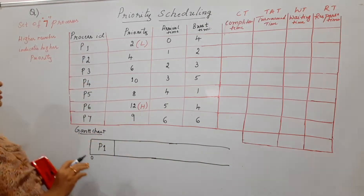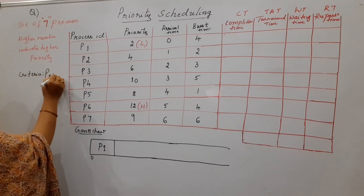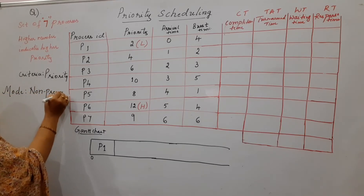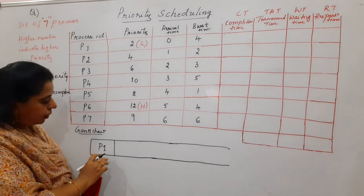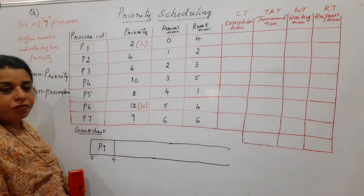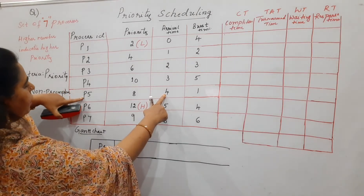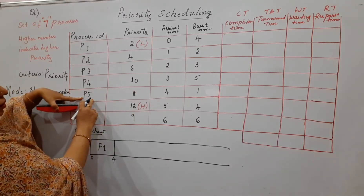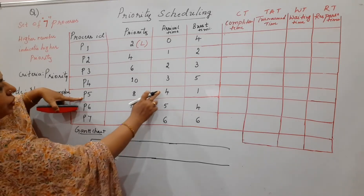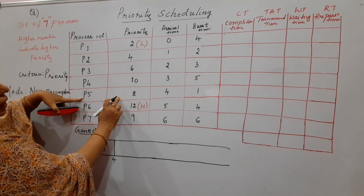We are solving the non-preemptive type first. The criteria is priority and the mode of operation is non-preemptive. In non-preemptive scheduling, once a process is assigned the CPU it runs to completion. P1 has burst time 4, so it ends at time 4. At time 4, we check which processes are available: P2, P3, P4, and P5 have all arrived.